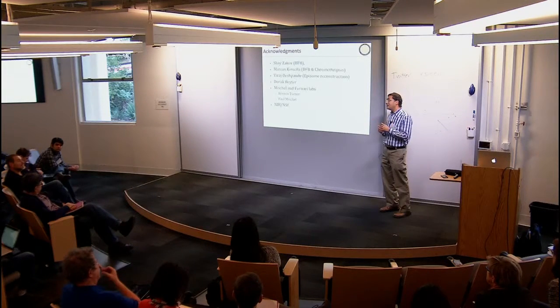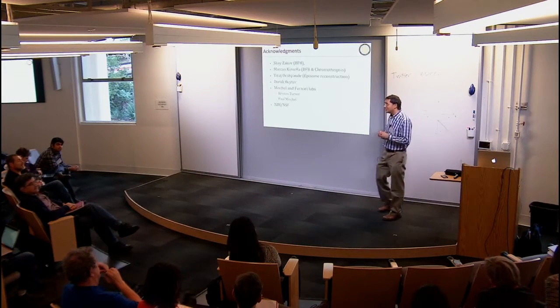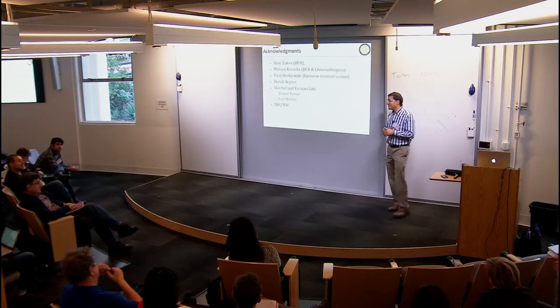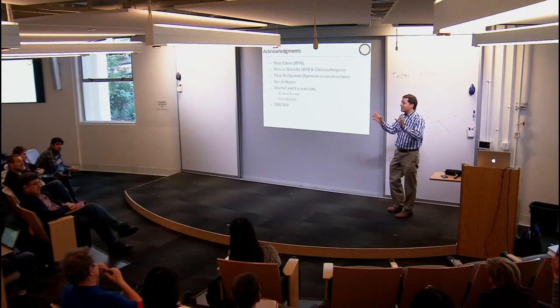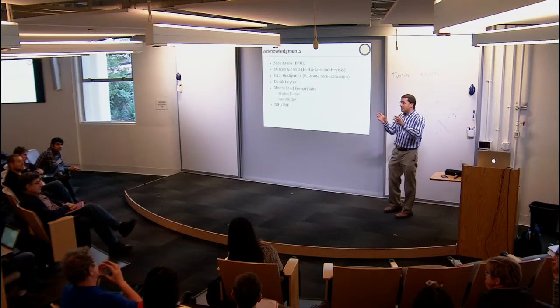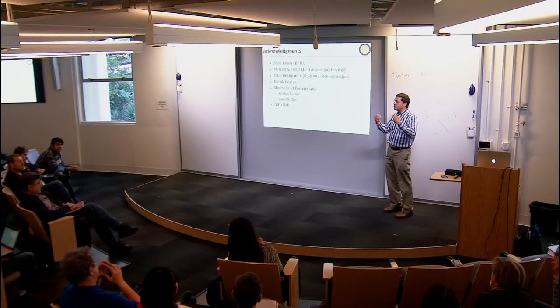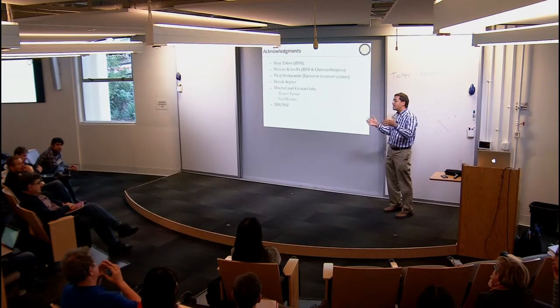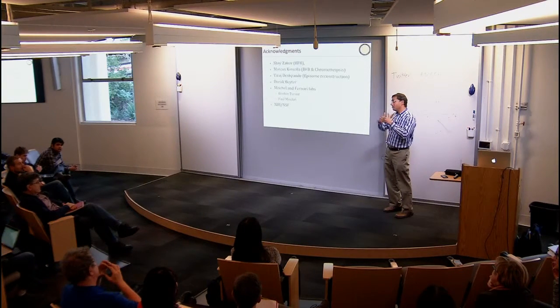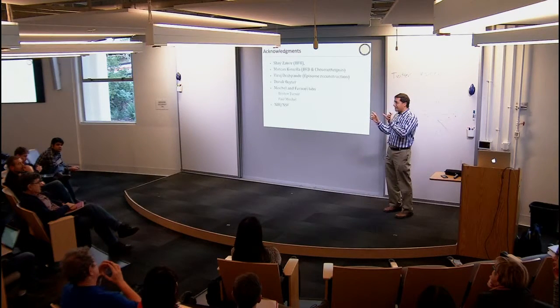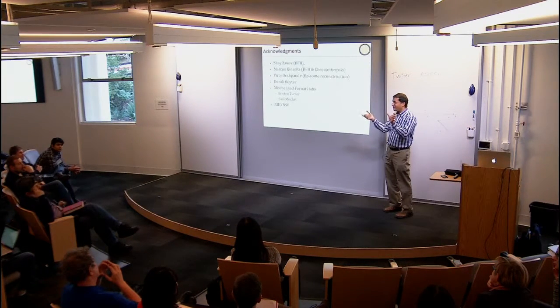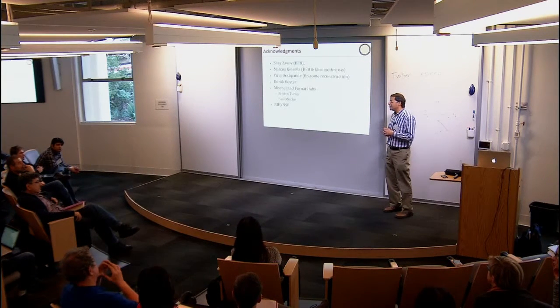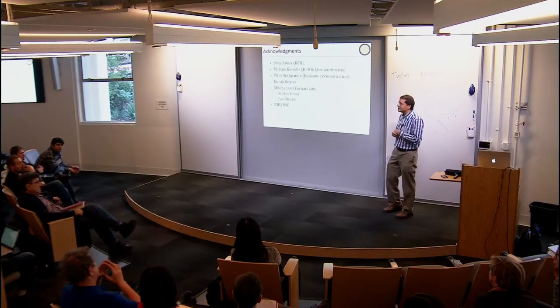Many of these long-read technologies are actually unsuited for high number of duplications. Serafim is in the audience. He can contradict me. But when you're using the bar-coding-based technologies, you're using the proximity on the genome to say they come together. If you have duplications and the duplicated forms are inverted and so on, it's not yet clear what kind of signal they will give on these long-reads. Maybe you want to say something, Serafim?